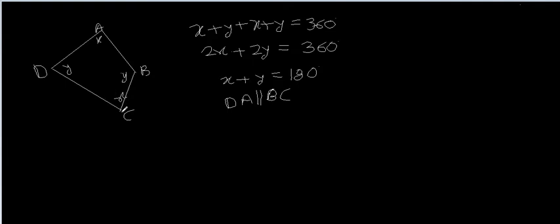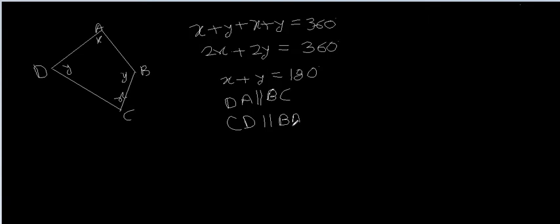Similarly, again x plus y equals 180 degrees. Angle C equals x and angle B equals y, so angle C plus angle B equals 180 degrees, with the transversal being BC. Hence we can say that CD is parallel to BA. Now these two conditions help us to say that this quadrilateral is a parallelogram. Hence we have proved that if any quadrilateral has its opposite angles equal, then it's a parallelogram.